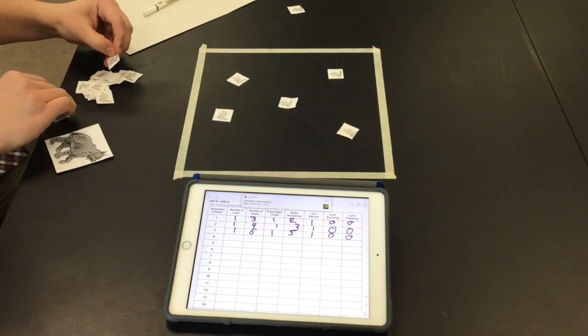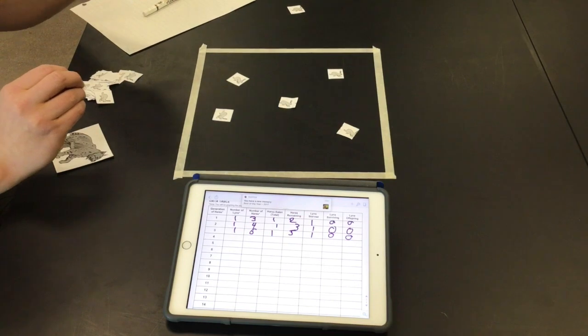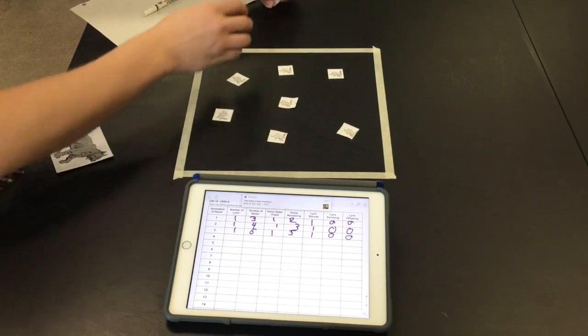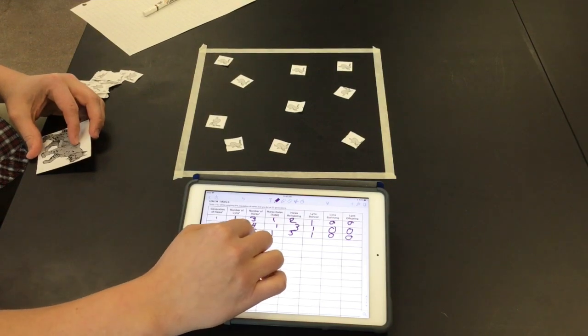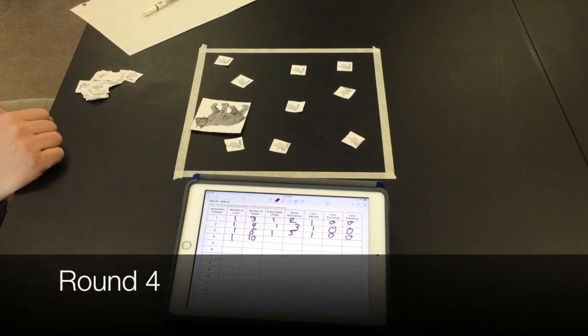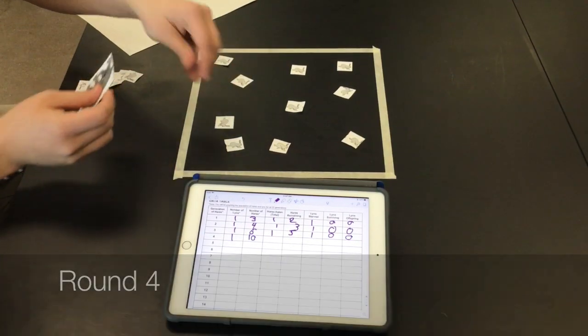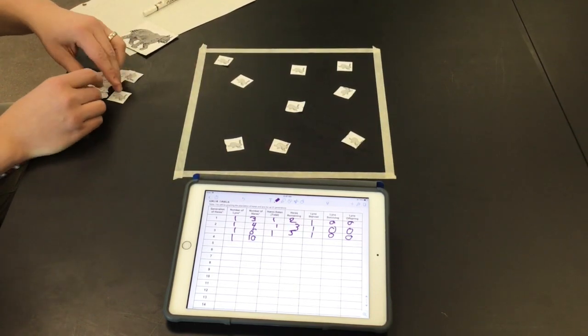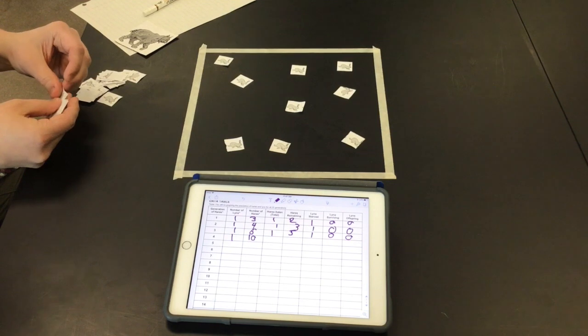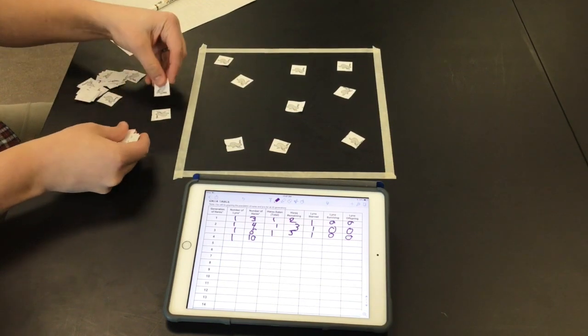All right, so then five hairs remained. We're going to double that to ten. Equally distributed on the habitat. Lynx eats one hair. The lynx starves. So nine hairs remained, which doubles to 18.